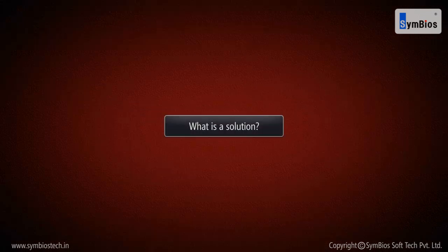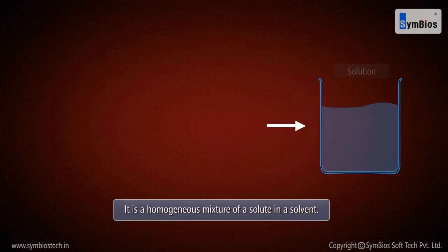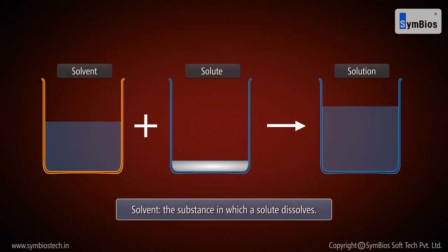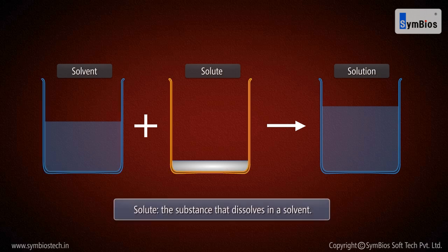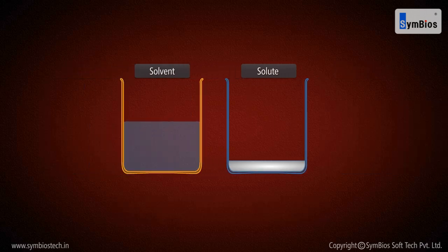What is a solution? It is a homogeneous mixture of a solute in a solvent. Solvent is the substance in which a solute dissolves. Solute is the substance that dissolves in a solvent. The solvent is the substance that is present in the greatest amount.